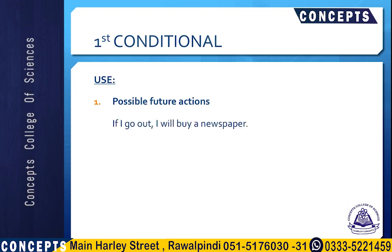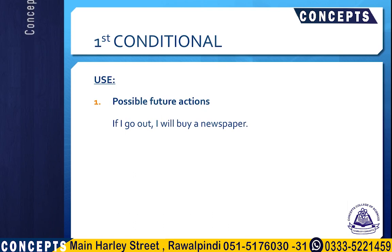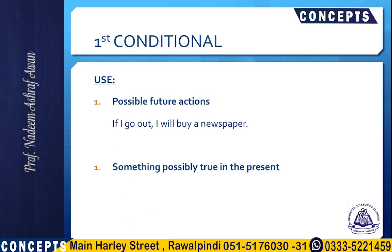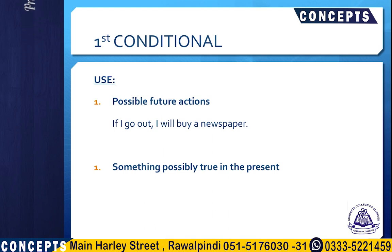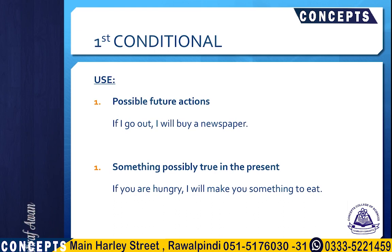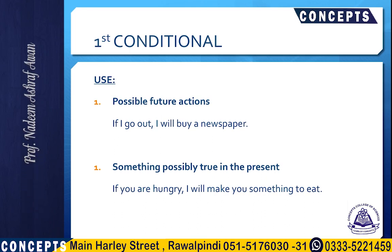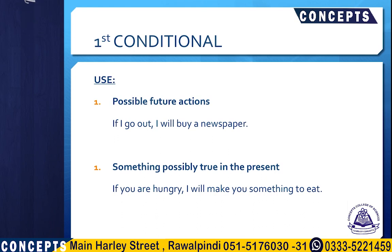For example: if I go out I will buy a newspaper. When I say that, I want to say that there is a possibility of my going out and consequently buying a newspaper. The first conditional may also be used for something which is possibly true in the present. For example: if you are hungry I will make you something to eat. The conditional part — if you are hungry — refers to the possibility of your being hungry now, so it refers to something which is possibly true in the present.